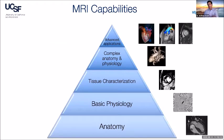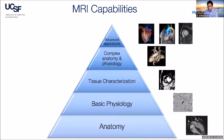Focusing on cardiac MRI, this is a schema I'd like to use to think about its applications. At the base of the pyramid, the most basic use is to characterize anatomy and basic physiology. Moving on, we can characterize tissue, then characterize complex anatomy and physiology such as single ventricles and other complex congenital heart disease. Finally, we can apply MRI for advanced applications such as 3D printing, assessment of four-dimensional flow, and cardiac strain — technologies I'll discuss during this lecture.